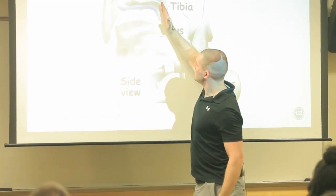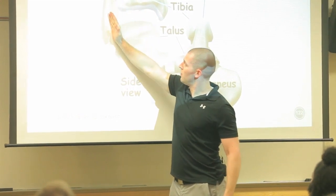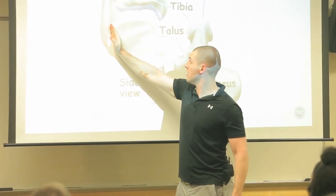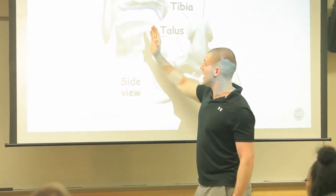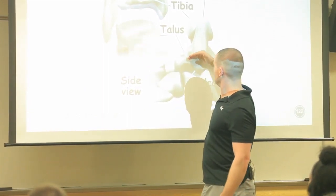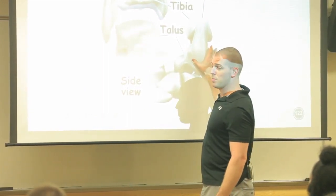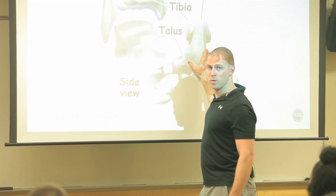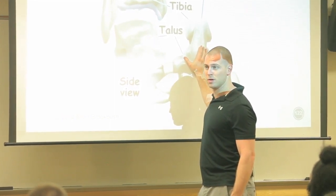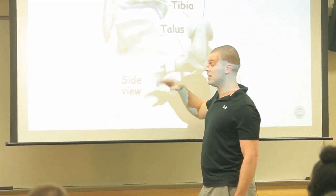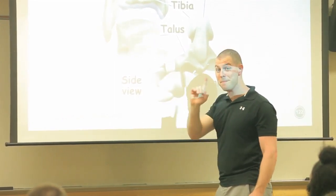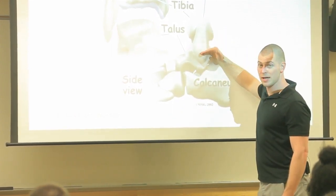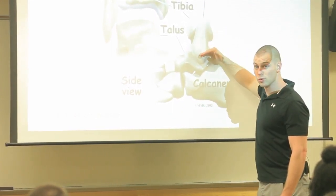So you have the end of the tibia and the fibula, the lateral malleolus of the fibula coming down, and basically blocking this part of your ankle joint into - what plane can this actually move? Sagittal. That's it. Alright, so that's the tibiotalar or talocrural joint.